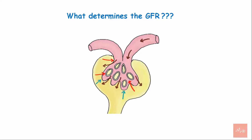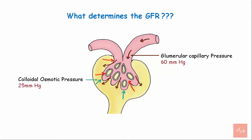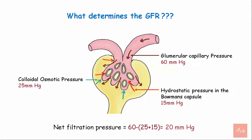What determines the GFR? The glomerular capillary pressure exerted by blood in the glomerular capillaries is about 60 mmHg. The colloidal osmotic pressure exerted by plasma proteins in the glomeruli is about 25 mmHg. The hydrostatic pressure in Bowman's capsule is 15 mmHg. So the net filtration pressure that pushes liquid out is 20 mmHg.